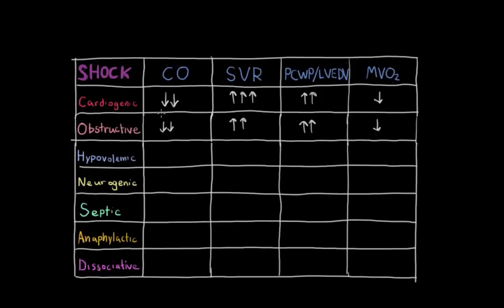Now hypovolemic shock, the issue is low blood volume. So because of low blood volume, there is a low amount of blood that can be squeezed forward from the heart. Low fluid return to the heart means low cardiac output, low delivery of oxygen. And because of this low blood volume, blood vessels are trying to clamp down. And so systemic vascular resistance will be very elevated.